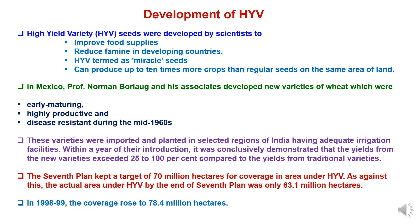The 7th Five Year Plan set a target of 70 million hectares for coverage of area under high yielding varieties. However, the actual area under high yielding varieties by the end of the 7th plan was only 63.1 million hectares — the target was not reached. By 1998-99, the coverage of high yielding varieties rose to 78.4 million hectares, indicating that the trend of using high yielding varieties was increasing.